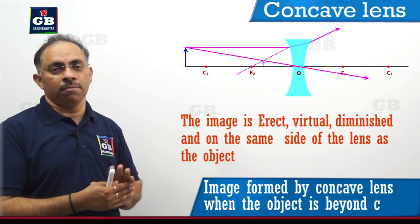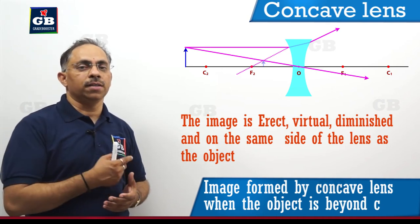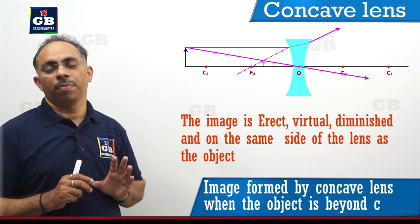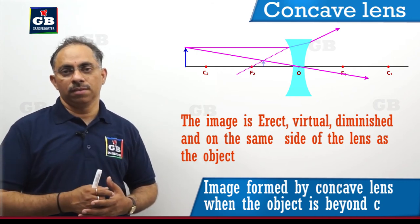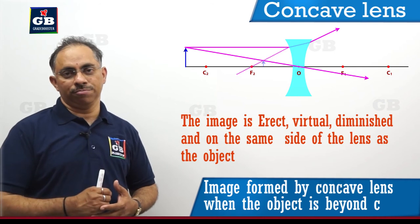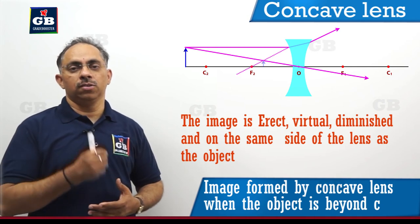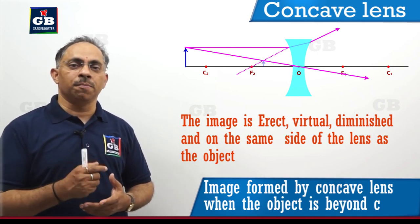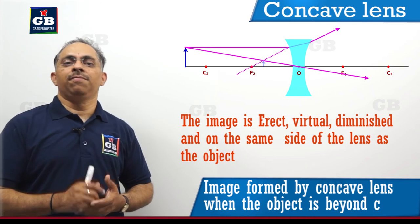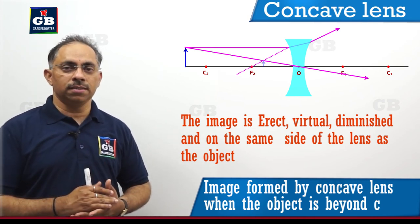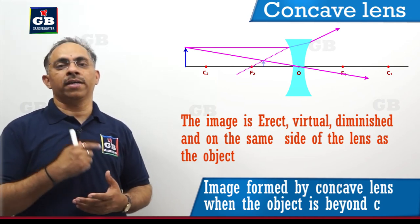However close we move the object toward the lens, the nature of the image formed by a concave lens remains the same. The size of the image is smaller than that of the object — it is a diminished image. The image is erect with respect to the object: if the object is upright, the image is also upright, not upside down. We will not be able to catch this image on a screen, so it is a virtual image.